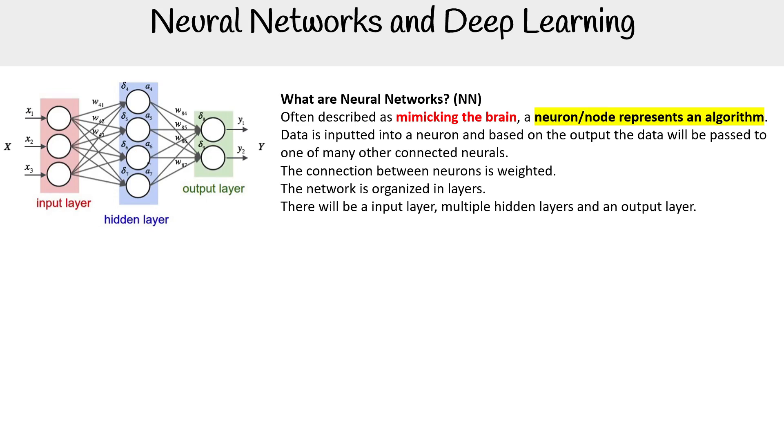You could technically have one hidden layer, but often you have multiple layers. If you have three or more, now we're talking about deep learning. If you have less than three, that's just a neural network.